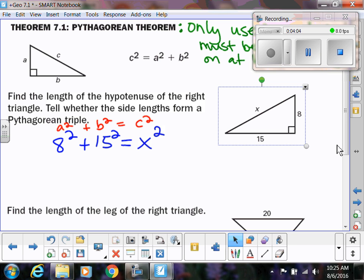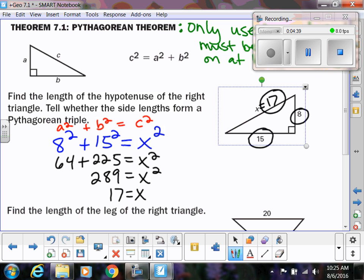So 8 squared is 64. 15 squared is 225. Add those two together. You might want to get out your calculator. 289. And if you try to take the square root of 289, you do get a whole number, which is 17. So this hypotenuse has a length of 17. So it's asking, is this a Pythagorean triple? Well, are all of the sides whole numbers? Yes. So we would say the set 8, 15, 17 is a Pythagorean triple.